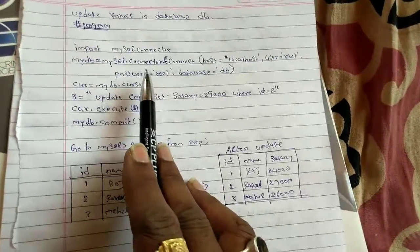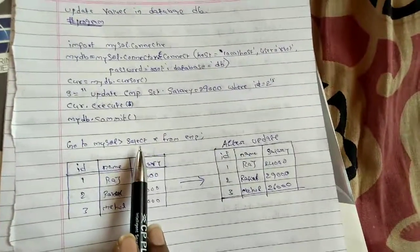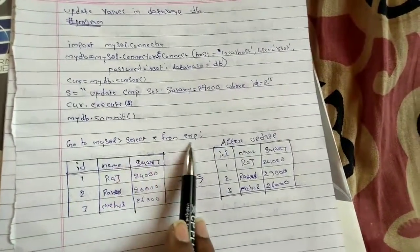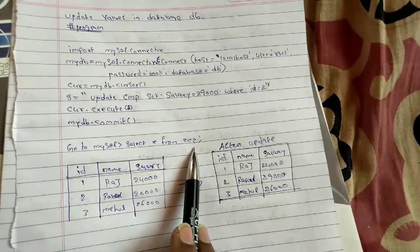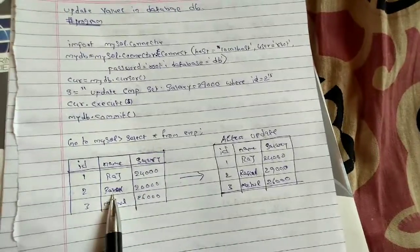So this is how your data will be updated. But what you have to do now is go to MySQL, select star from employee, execute this query. You will see before executing this query the data will be 20,000 for Rahul.